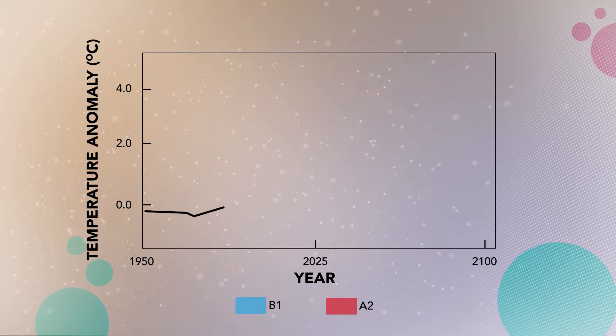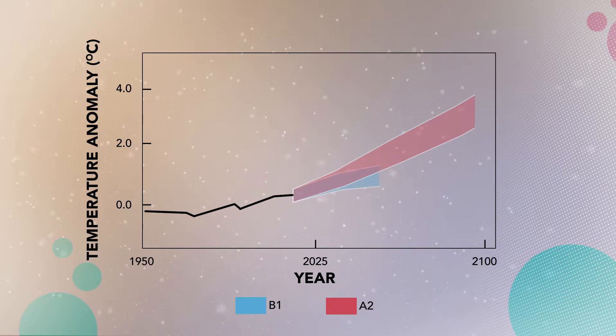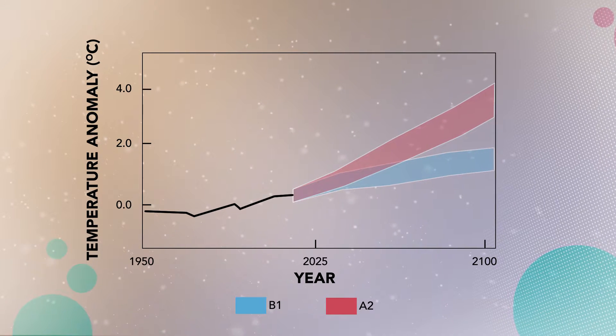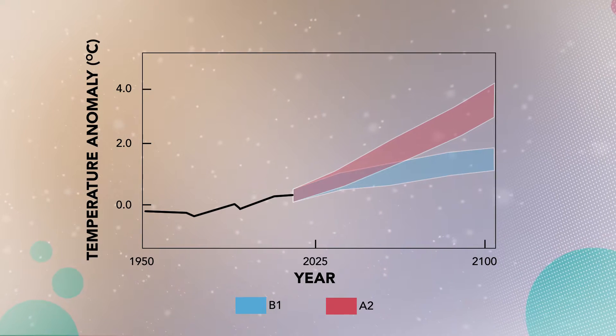We can't do that for the future period, so scientists have developed scenarios that represent what the future may be like if we continue emitting greenhouse gases as we have, or if we significantly reduce our greenhouse gas emissions, or something in between. In older climate model output, you may see these scenarios called A2 or B1. In newer climate model output, you may see them called RCP 8.5 or RCP 2.6. Each of these newer scenarios estimates how the radiative forcing on our atmosphere may change, and either way you are able to examine a range of possible futures.